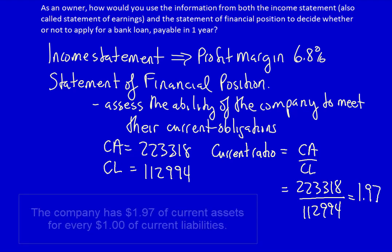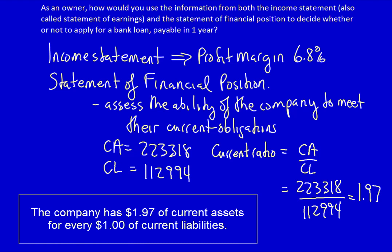What does that mean? It means that for every $1 of current liabilities, the company has $1.97 to cover those liabilities. The current ratio clearly indicates that this company would be able to pay down their existing debts when they come due, and so possibly a bank would be willing to loan them more money.